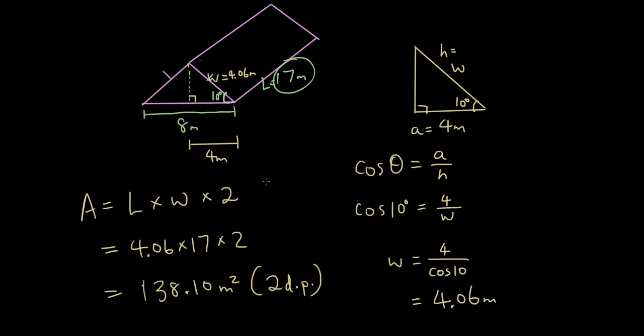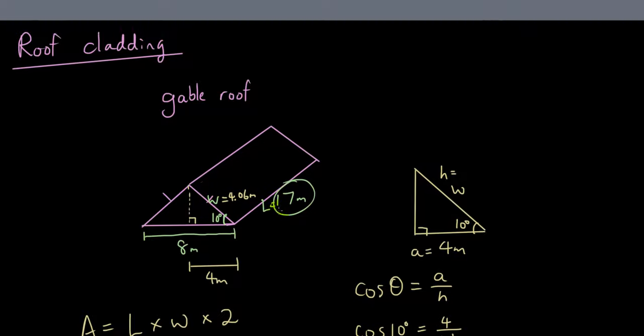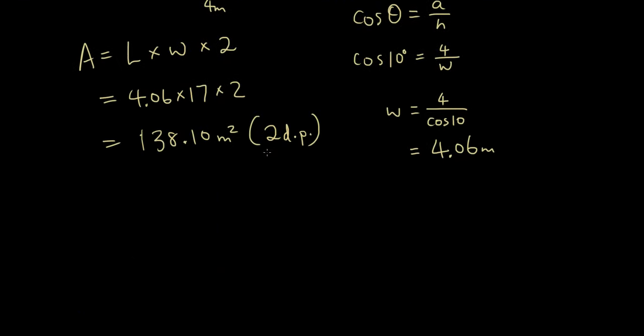Once we have the area of the roof, usually the carpenter will give you a quote. They'll say that the concrete tiles cost, let's say, $40 per meter squared. Find the cost of tiling the roof.